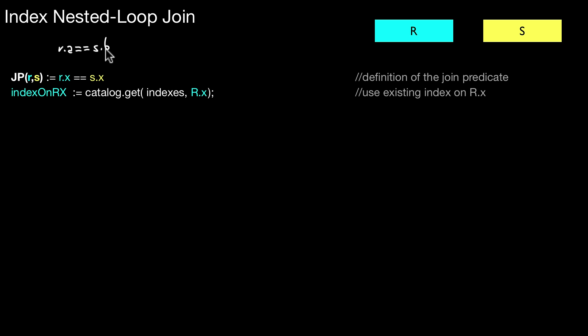So they happen to have the same names. But even if it's, whatever, if it's R.a equals S.b, if I have an index on R.a or an index on S.b, this algorithm can be applied. So there has to be an index on one of the attributes I use in the comparison. And that is what I do here.